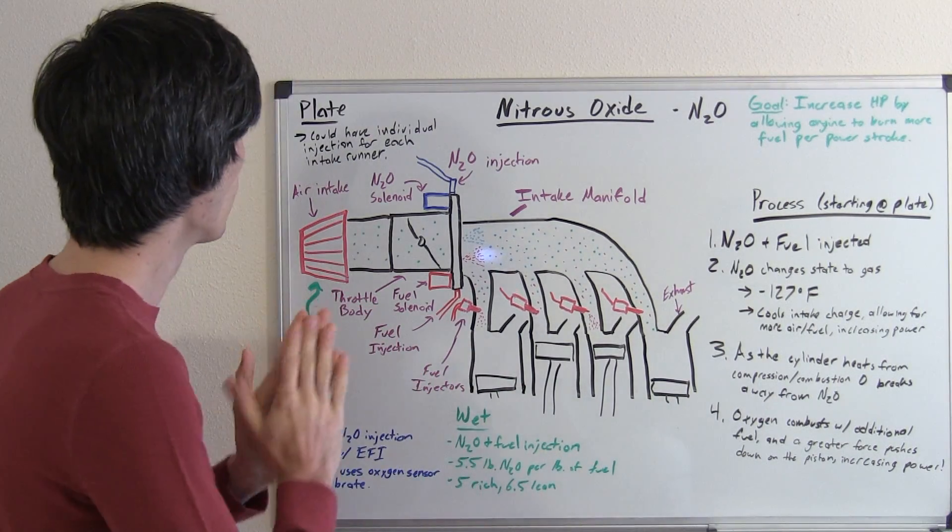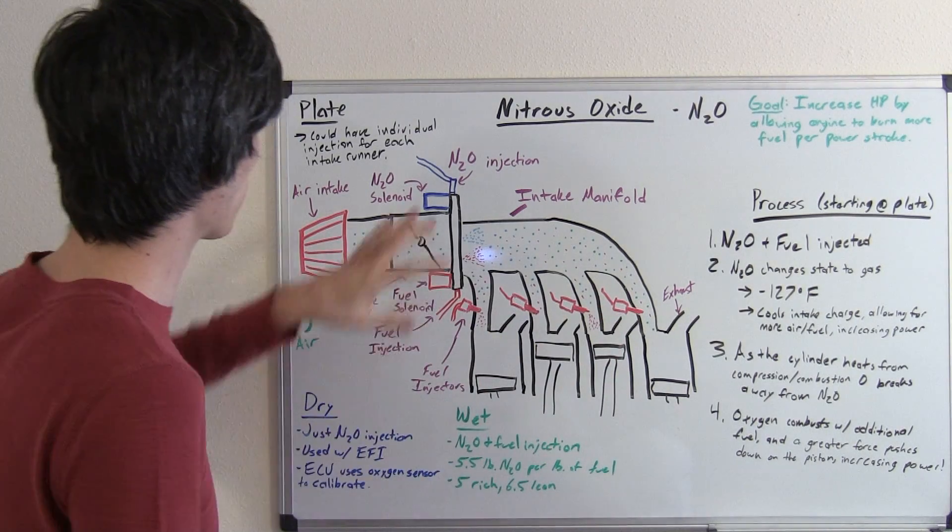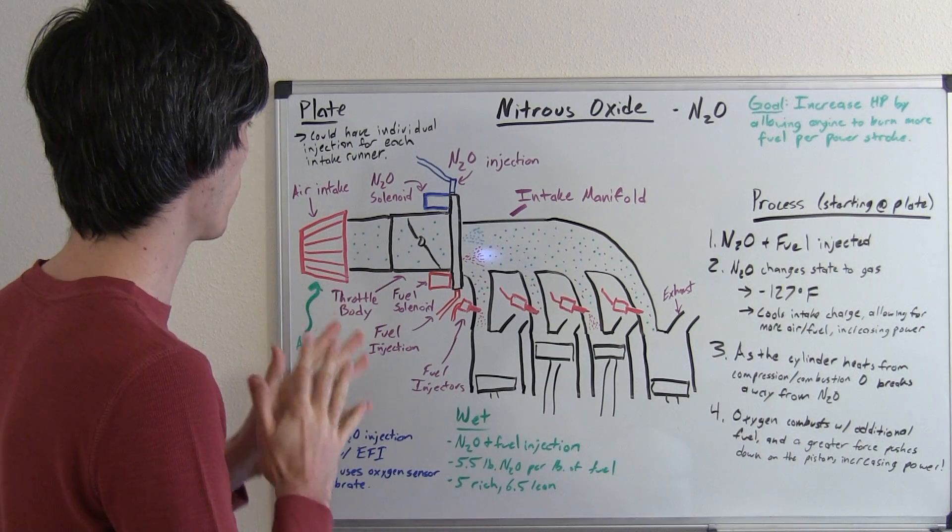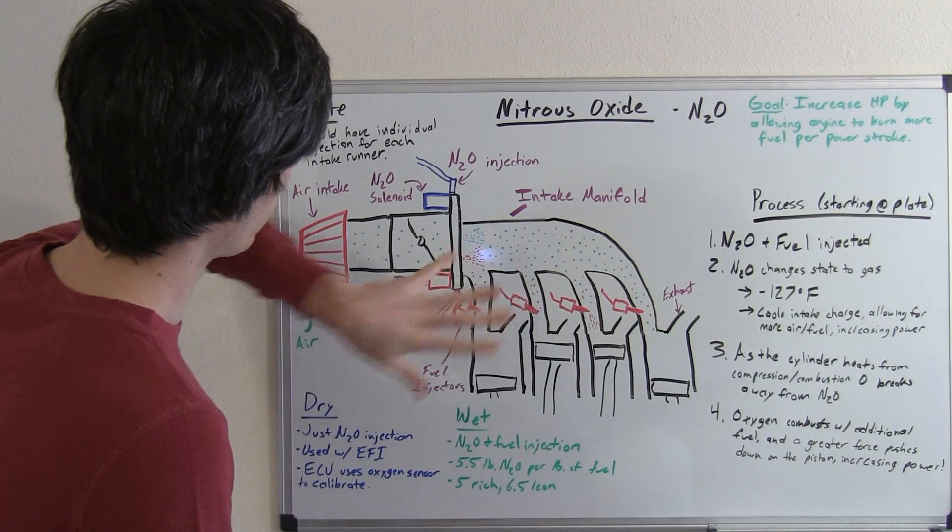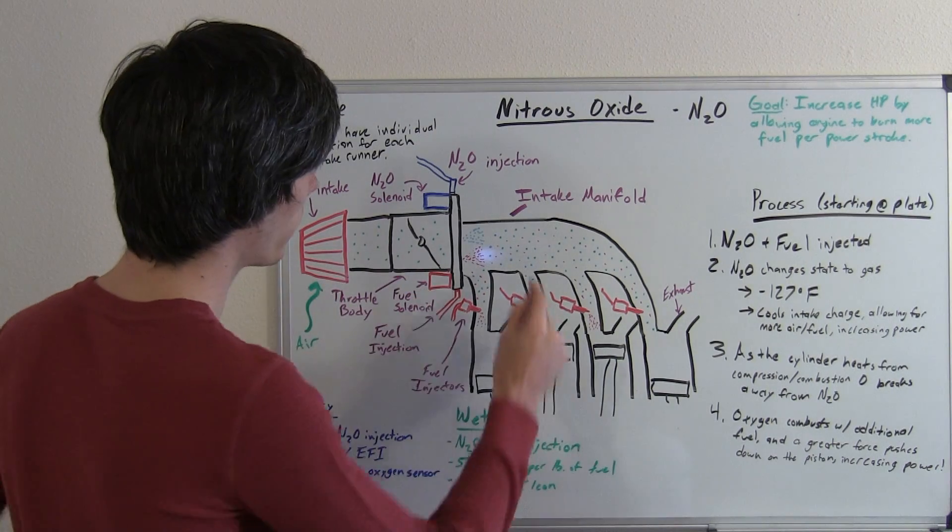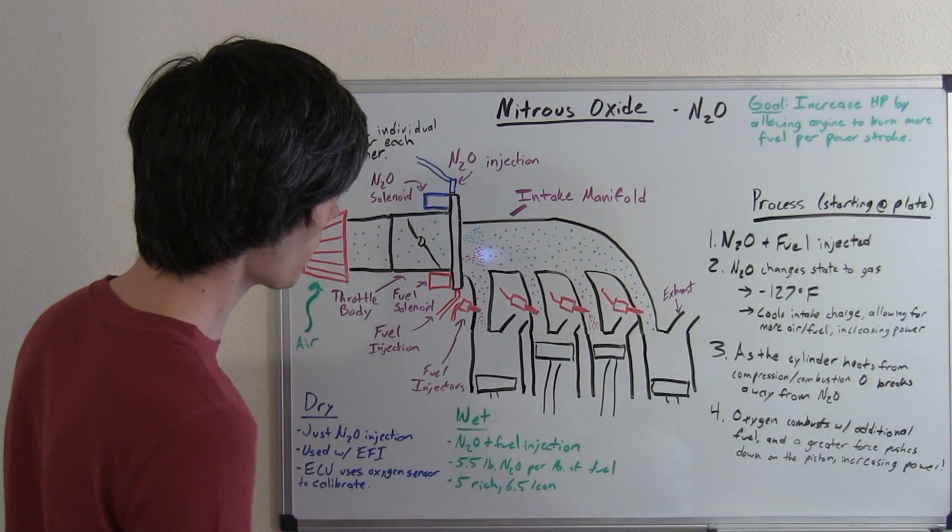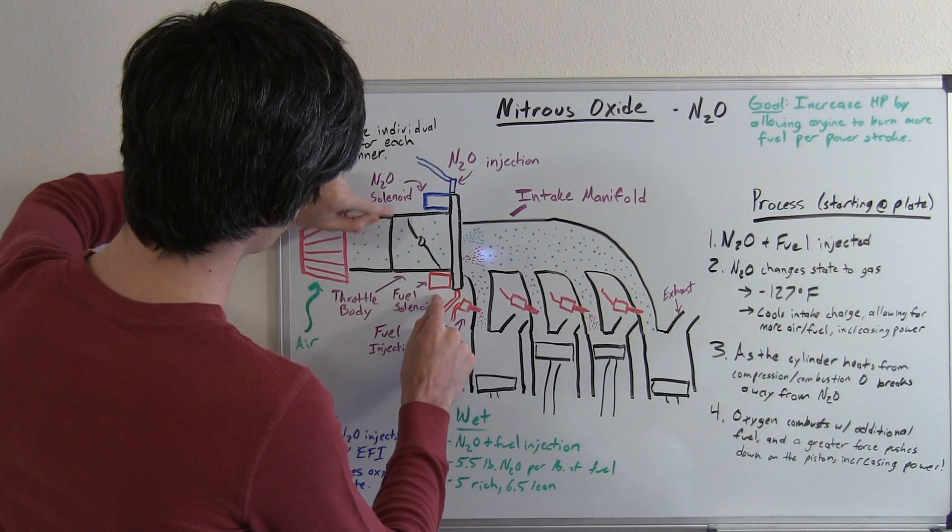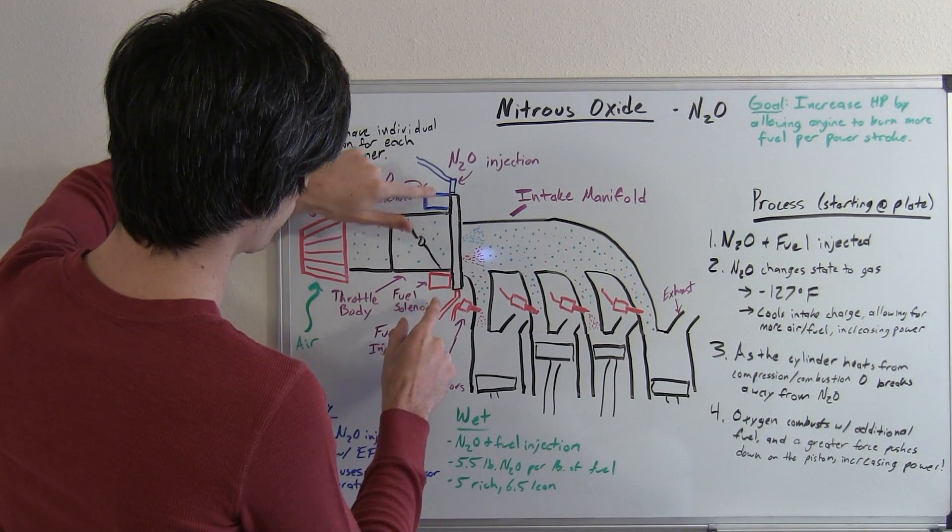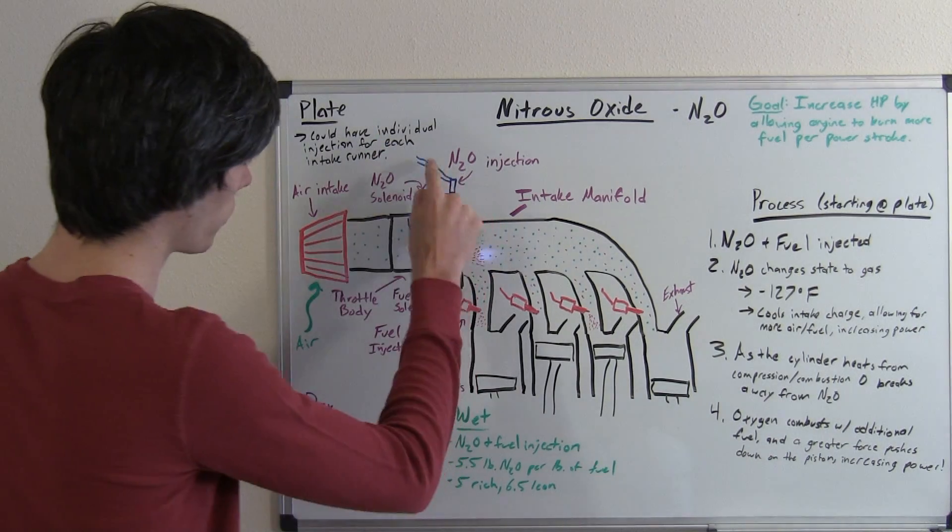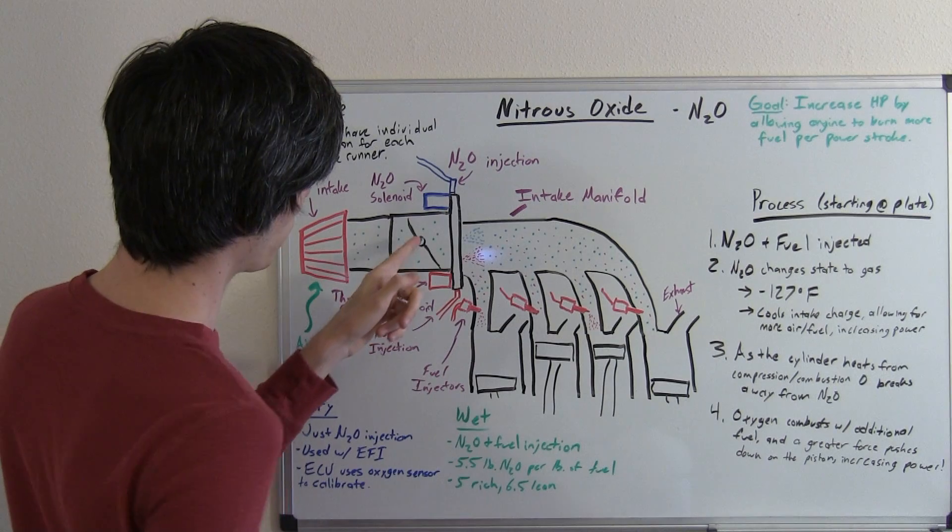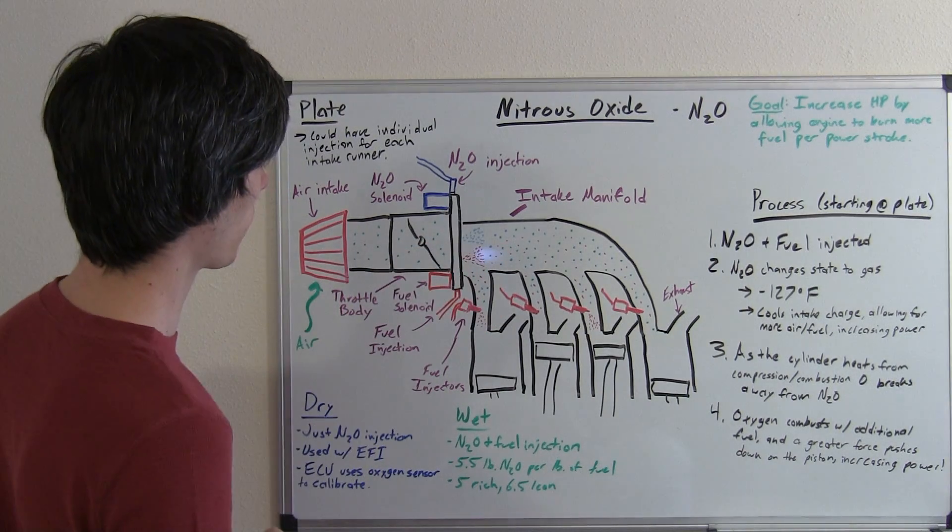So what we've got here is a plate type system. Now there's multiple ways you can do this, but for the demonstration here what we've got is a plate and this plate is between our throttle body and our intake manifold. And you've got injectors, you've got fuel solenoids and a nitrous solenoid. So these are going to control the flow of nitrous and fuel which are going to be injected into this plate sandwiched between the throttle body and the intake manifold.